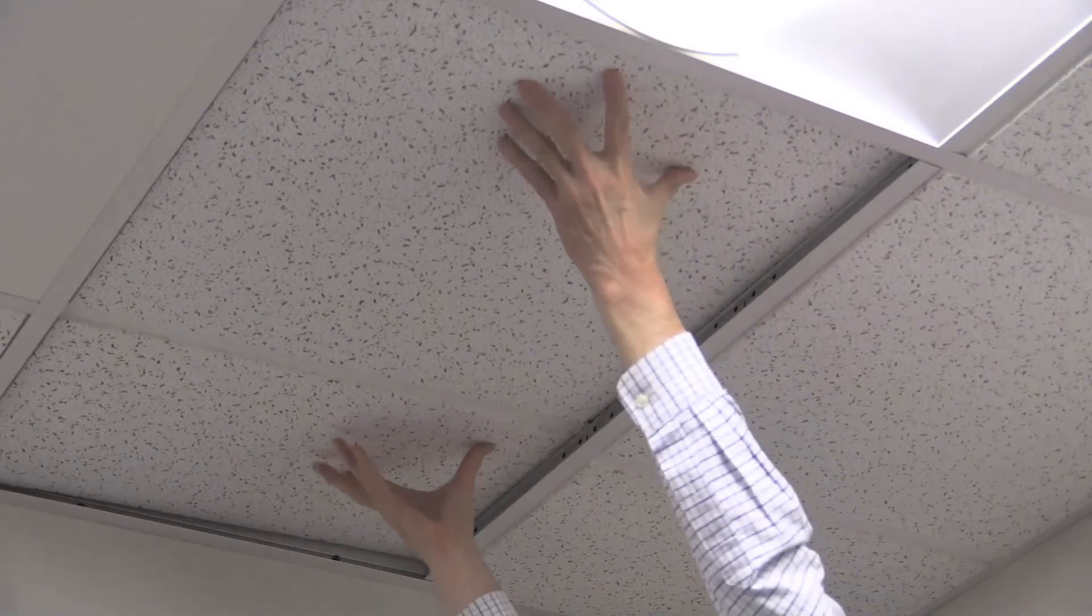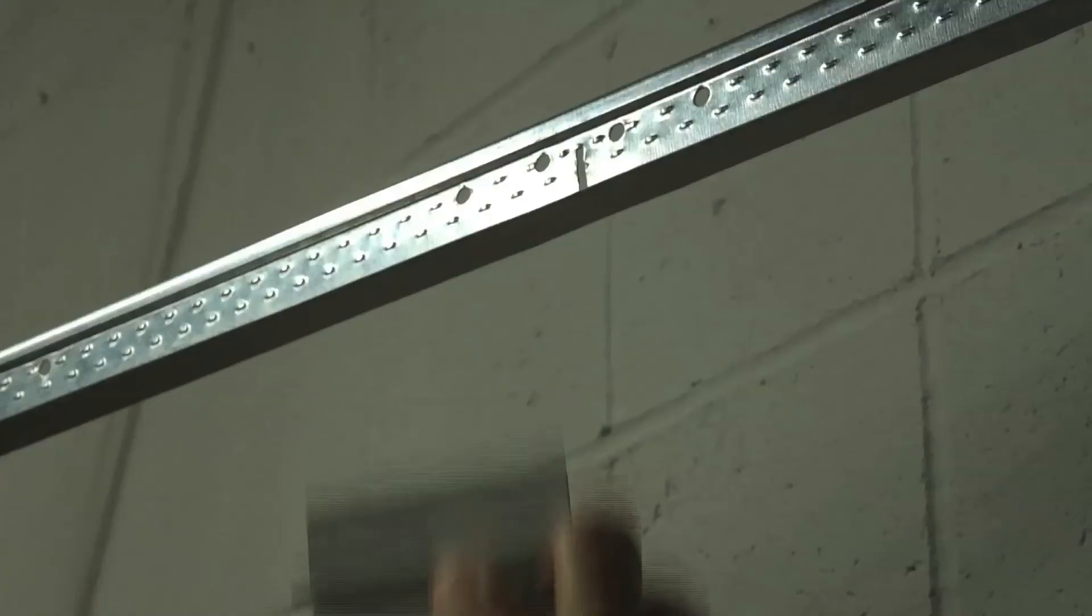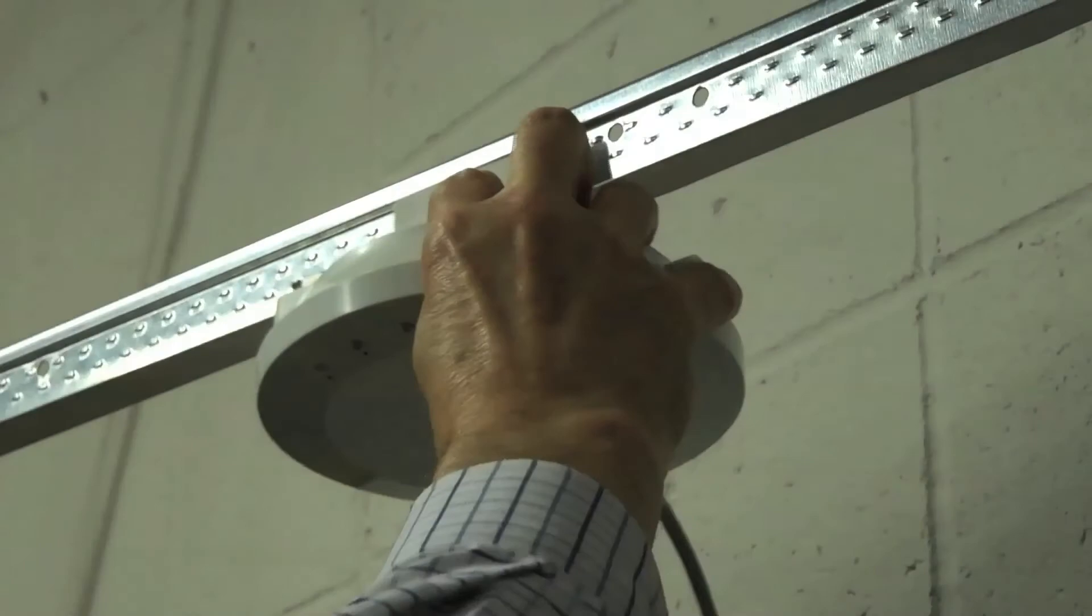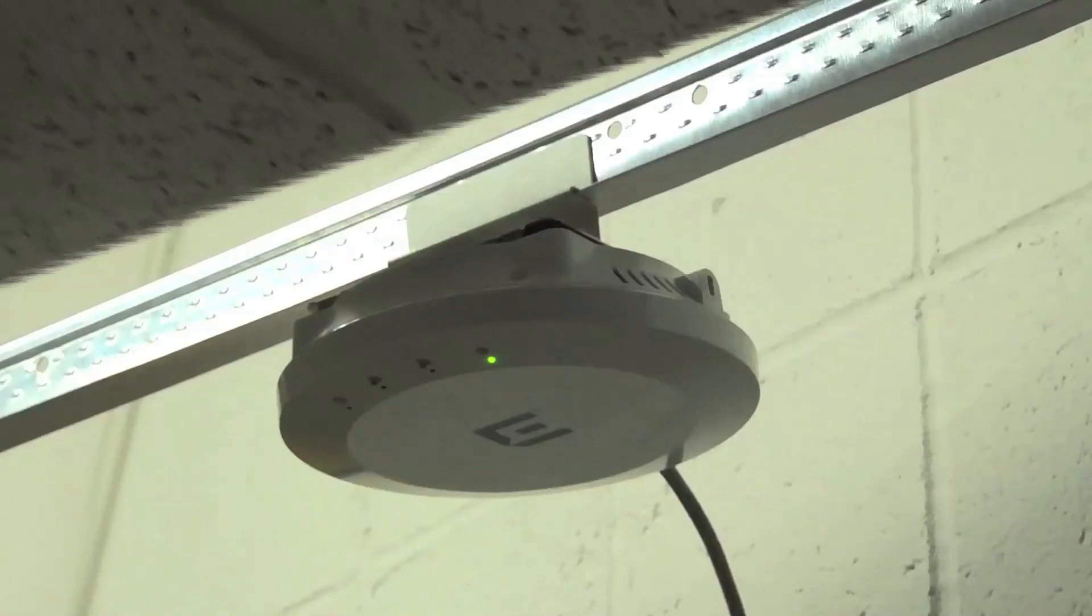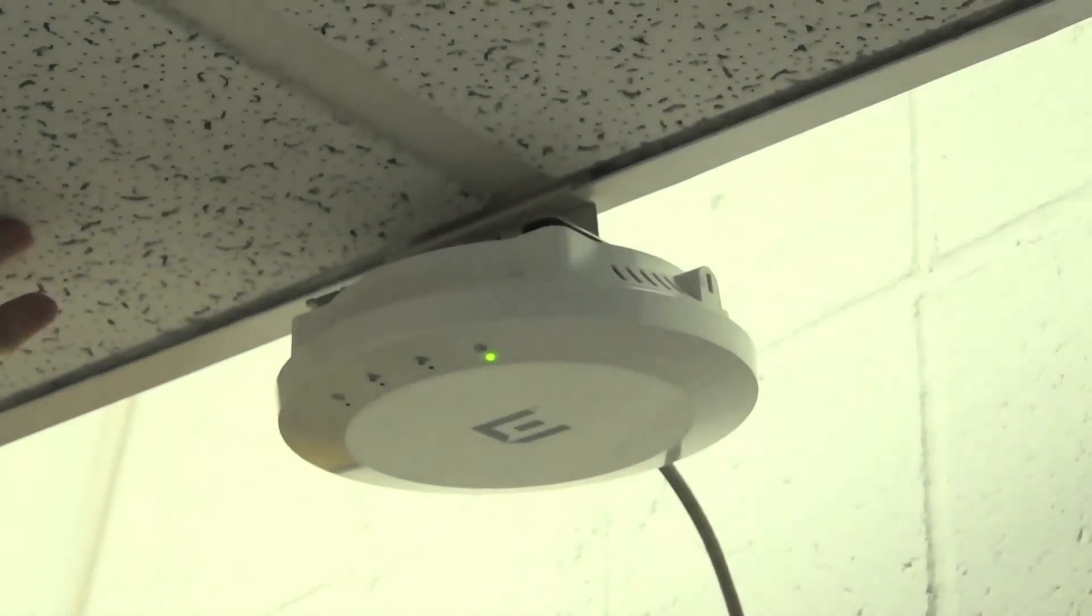Determine where the AP is to be installed and if necessary, cut the ceiling tiles for the cables. Then move the drop or suspended ceiling tiles out of the way. Slide the adapter onto the T-bar.